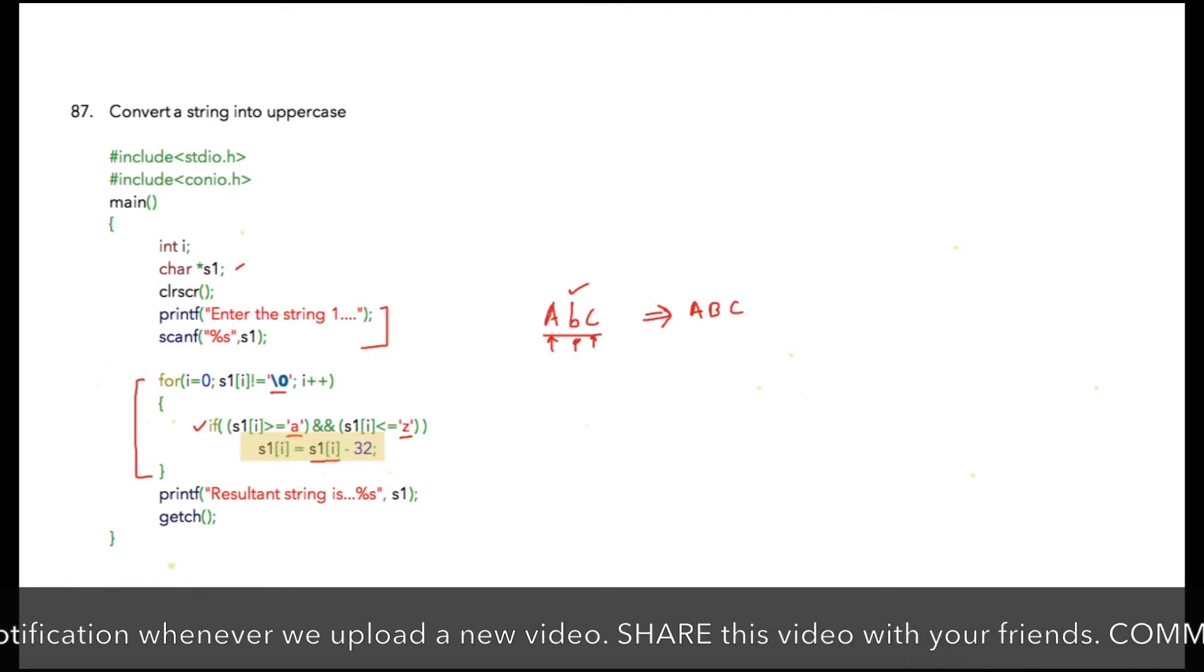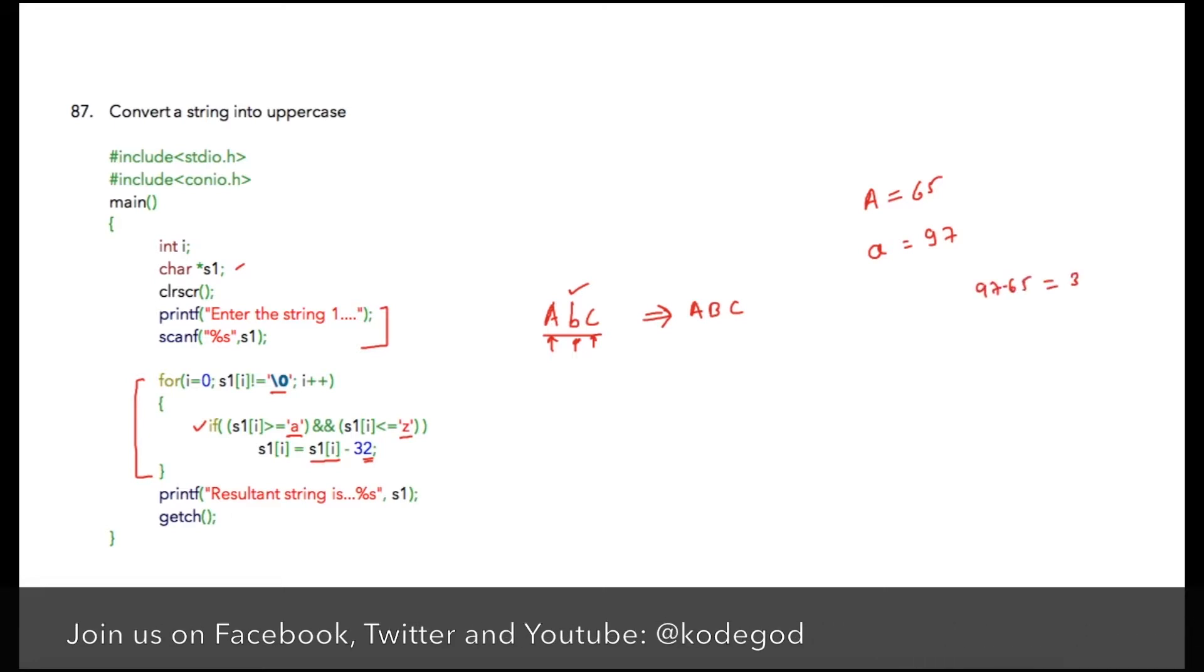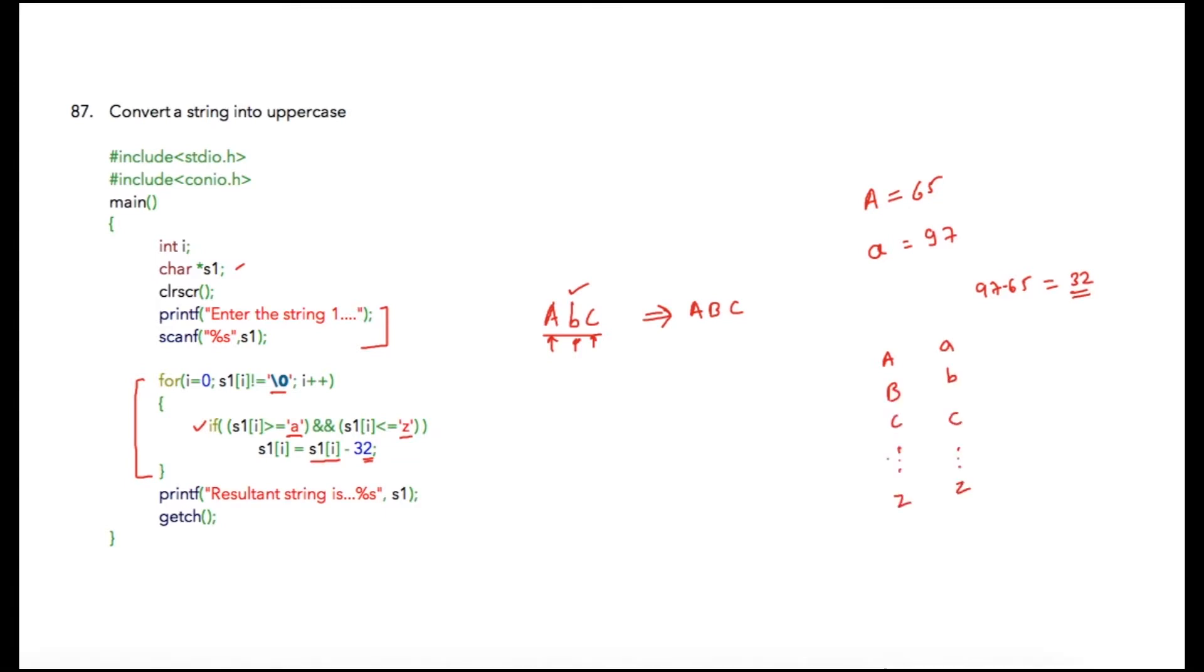Why 32? Because ASCII value of A is equal to 65 and ASCII value of small a is 97. If we subtract 97 by 65 we get 32, so there is a difference of 32 across all capital and small values. If this is 65, 66, 67 and so on, then these values are 97, 98, 99 and so on. There is always a difference of 32 between small and capital letters. That is why in order to convert current character symbols from lowercase to uppercase we are required to subtract it by 32.